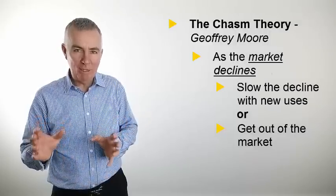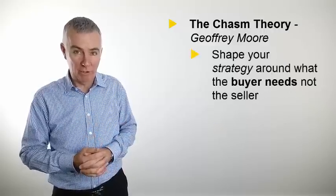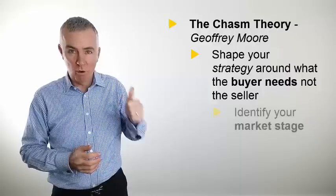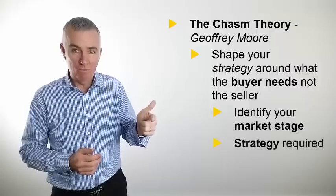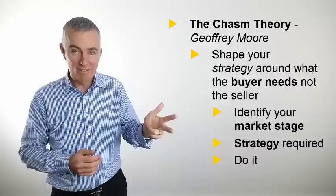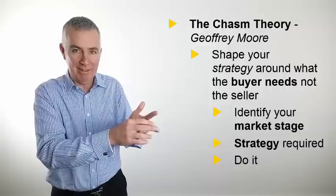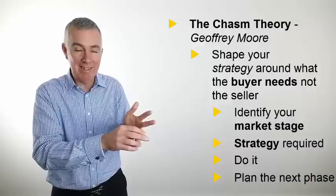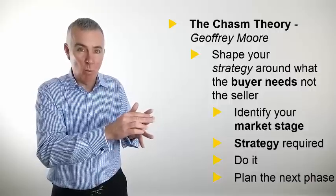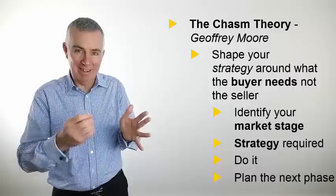Long story short, you're shaping your strategy according to what the buyer needs, not what you the seller wants to do. Work out where your market is. Work out what strategy is needed therefore. Do it. Don't just talk about it. Build and execute on a strategy that precisely meets what the market needs at that time and plan for the next phase in the market so that when the buyers start to indicate that you've kind of run out of one group of buyers and you're ready to move on to the next, then you've got strategy ready to execute for that next group of buyers. I hope that helps.